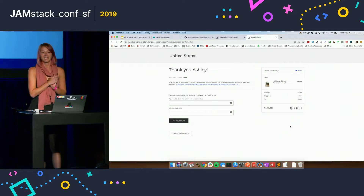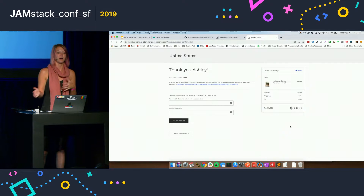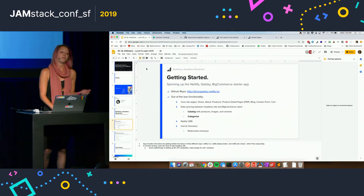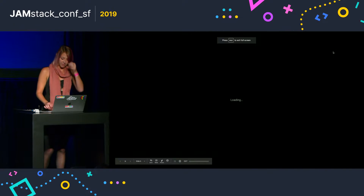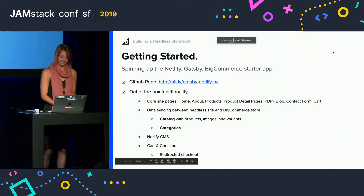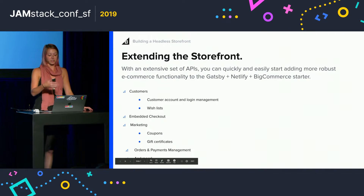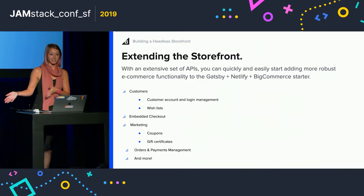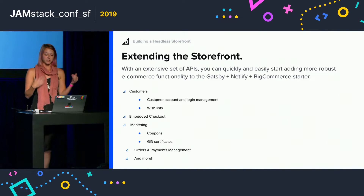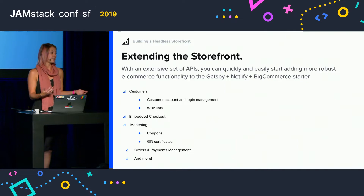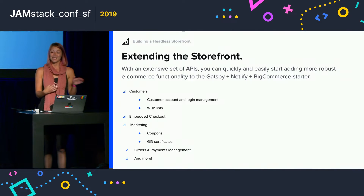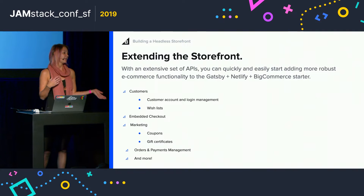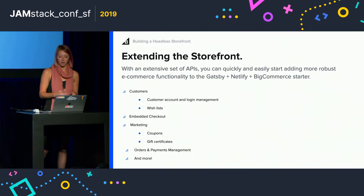That's how easy it is to set up a functioning e-commerce site. Obviously you'll want it to reflect your brand experience and have more complex, robust functionality. In addition to what comes out of the box, there are many ways to extend this storefront with BigCommerce. Since we're API-first, all of this functionality can be added via our APIs and SDKs. These are some of the more common e-commerce features people want to add, and all are available via API.